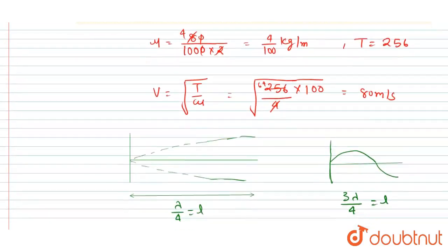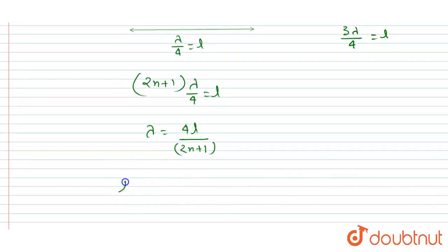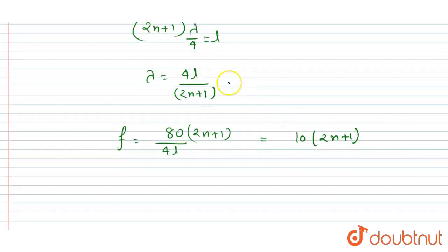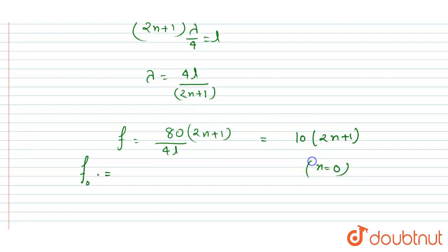The velocity is already calculated as 80 m/s. The frequency is f = v(2n+1)/(4L) = 80(2n+1)/(4×2) = 10(2n+1) Hz. For the fundamental mode, n = 0, so the fundamental frequency is 1 × 10 = 10 Hz.